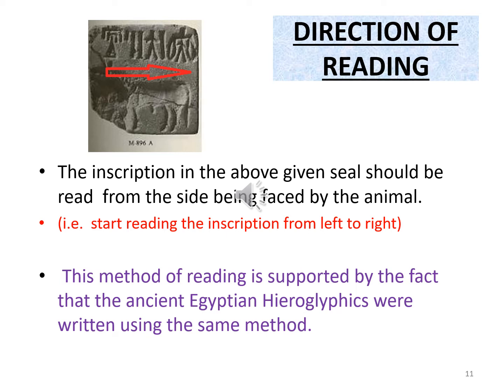Direction of reading the inscription: the inscription in the given seal should be read starting from the side being faced by the animal, that is, from left to right. This method of reading is supported by the fact that the ancient Egyptian hieroglyphics were written using a similar method.